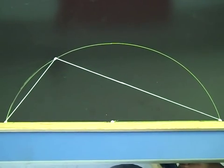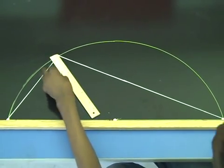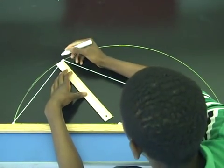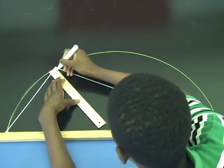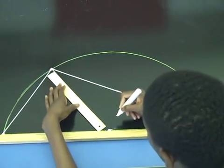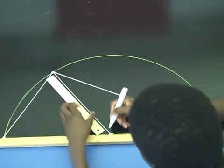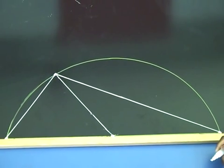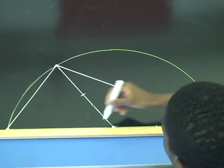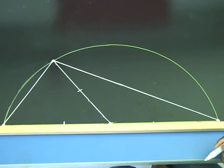So, the proof goes like this. First, we draw in a line from the center to that point on the semicircle. Now, that line is a radius of the circle. There are also two other lines on the diameter that are radii of the circle. So, all three of those lines have the same length.